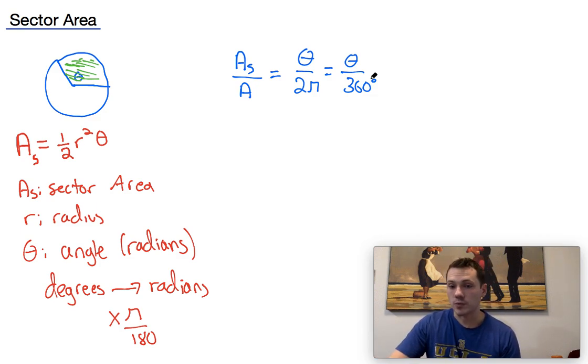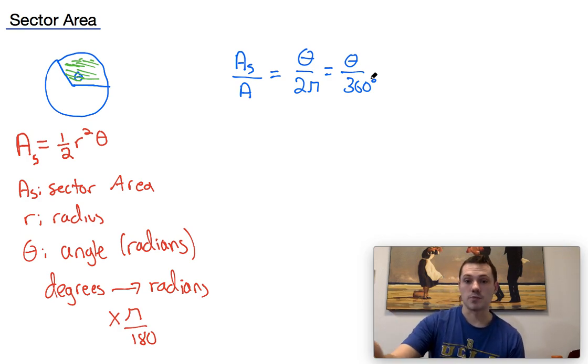You can use either one, just depends on what they provide you with for the most part. Sometimes they give you the sector area and the area, and ask you for the angle in radians or in degrees, whichever one they ask you for, just use the appropriate equation.